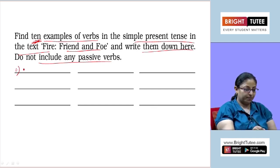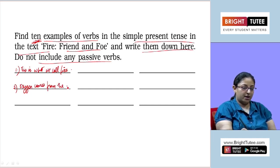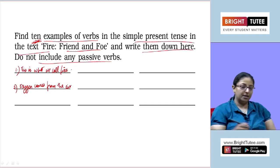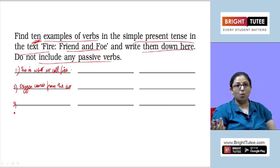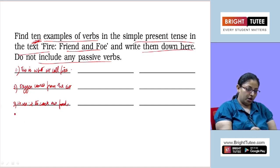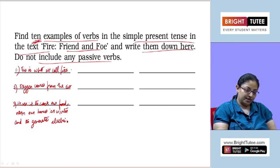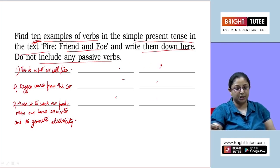For example: 'This is what we call fire.' You can write 'oxygen comes from the air.' These are simple present tense — facts or things we know. Third example: 'We use it to cook our food, to warm our homes in winter, and to generate electricity.' The rest — six more — you have to do on your own.